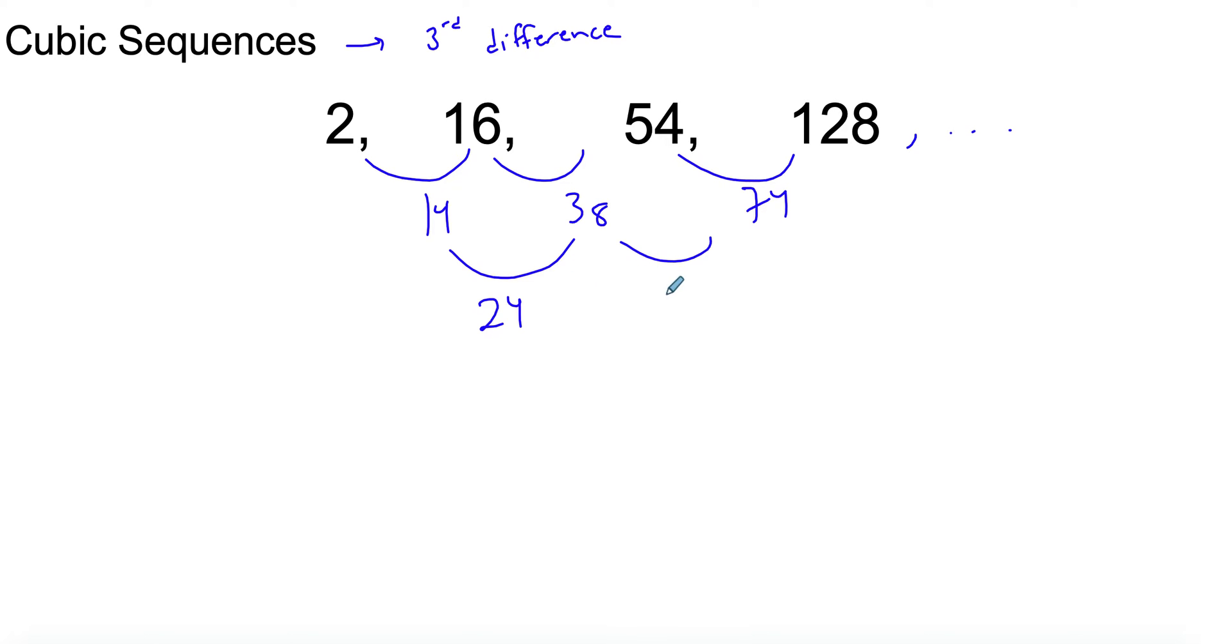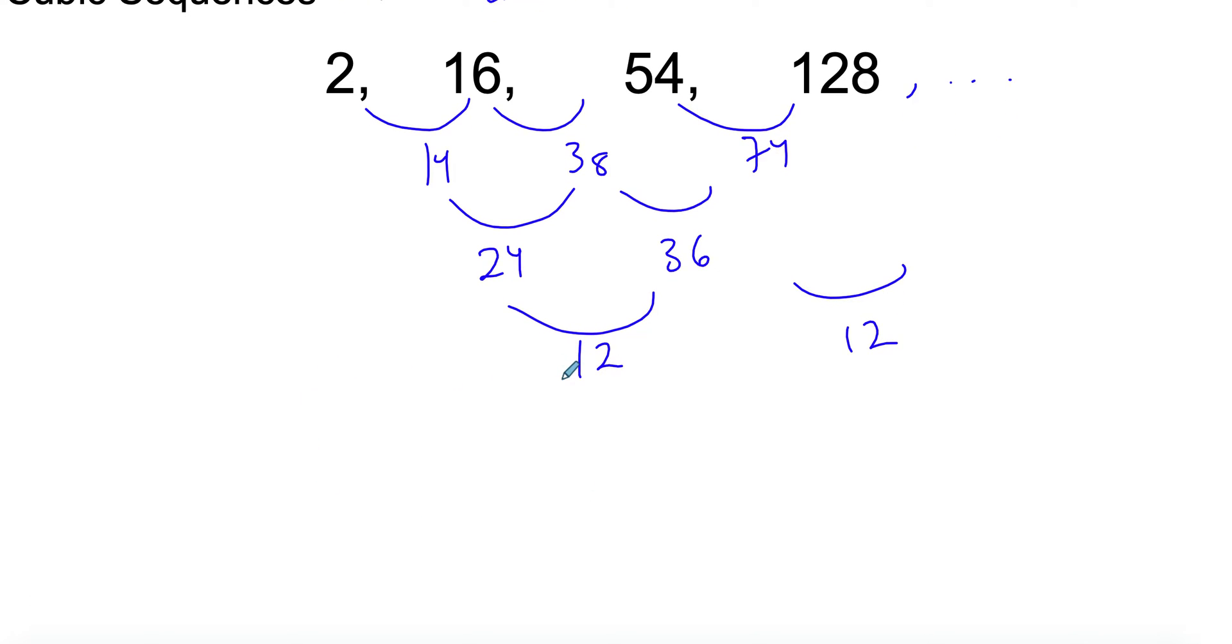So I'm going to go with another difference. I have 24, then I have 36. If I had more terms it would be more obvious that we have a constant sequence. We have 12 in this case. Ideally you would have five terms so you're able to know that you'll get another 12 here.